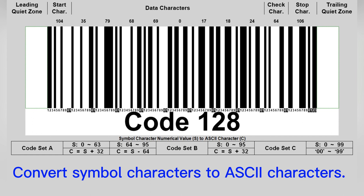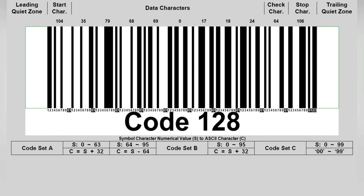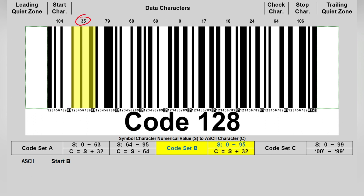Now let's convert symbol characters to ASCII characters. Code 128 has three data character code sets: code set A, code set B, and code set C. In this sample barcode, the start character is 104; character value 104 is start B, meaning code set B is defined initially. The first data character is 35; 35 plus 32 equals 67, which is ASCII value C. The second data character is 79; 79 plus 32 equals 111, which is ASCII value O. The third data character is 68; 68 plus 32 equals 100, which is ASCII value D.